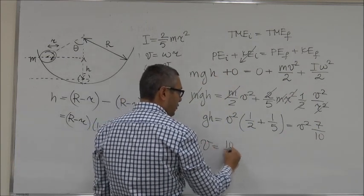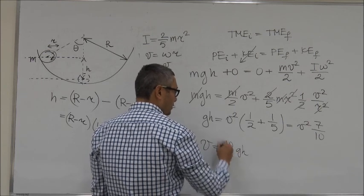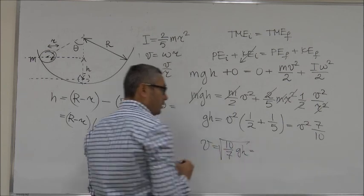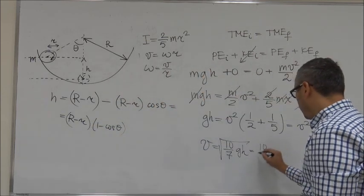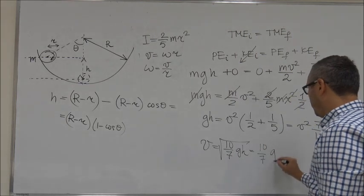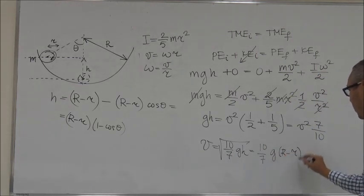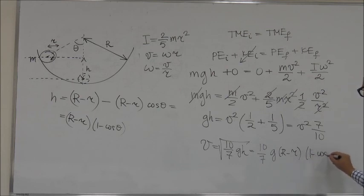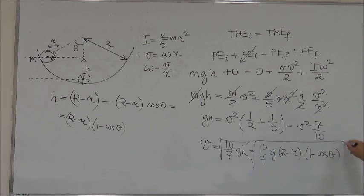Now we know that h is equal to this, so let's plug it in. v equals the square root of 10 over 7 times g times R minus small r times 1 minus cosine theta, and that's the answer for the translational velocity of the ball at the bottom.